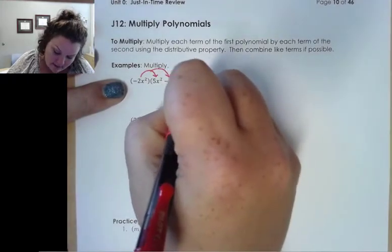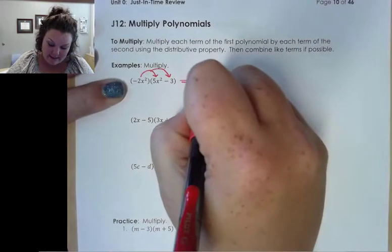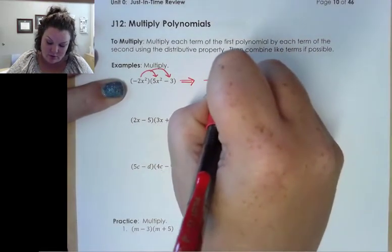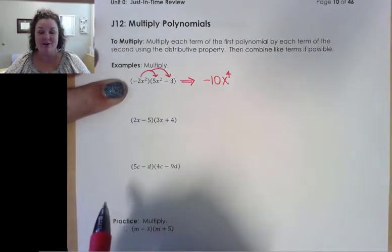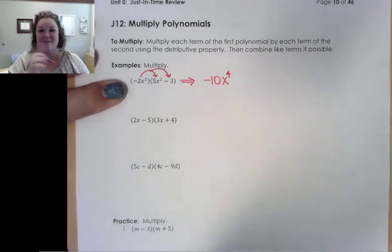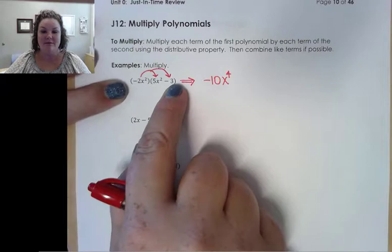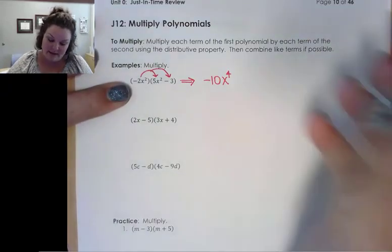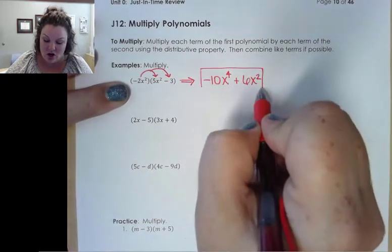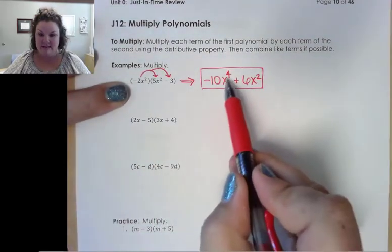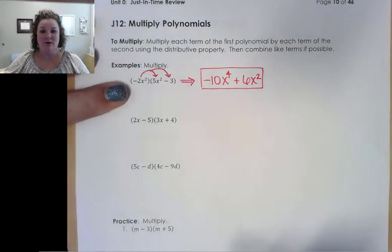So that means when we do negative 2x squared times 5x squared, we're going to get negative 10x to the fourth because we're adding those two exponents, right? When we multiply our x's together by our exponent rules that we went over a couple sections ago. And then we do negative 2x squared times negative 3. Negative times negative is going to make that a positive 6x squared. And because these are not like terms, we have an x to the fourth and an x squared, we can't combine them. So this is as far as we can go on this one.